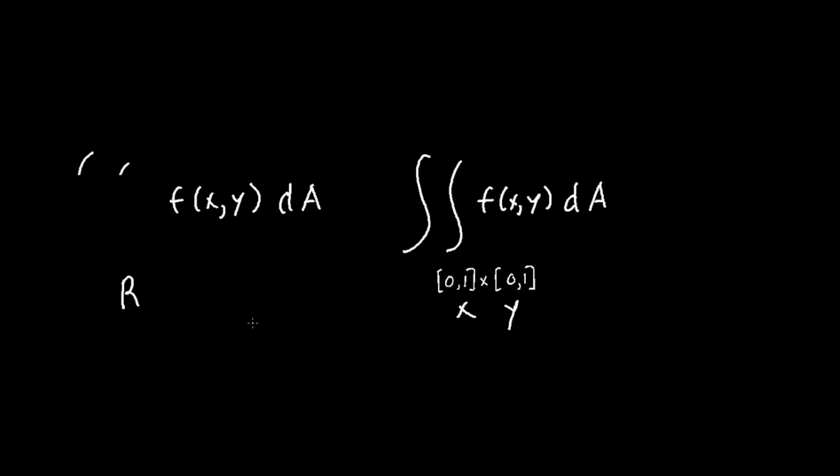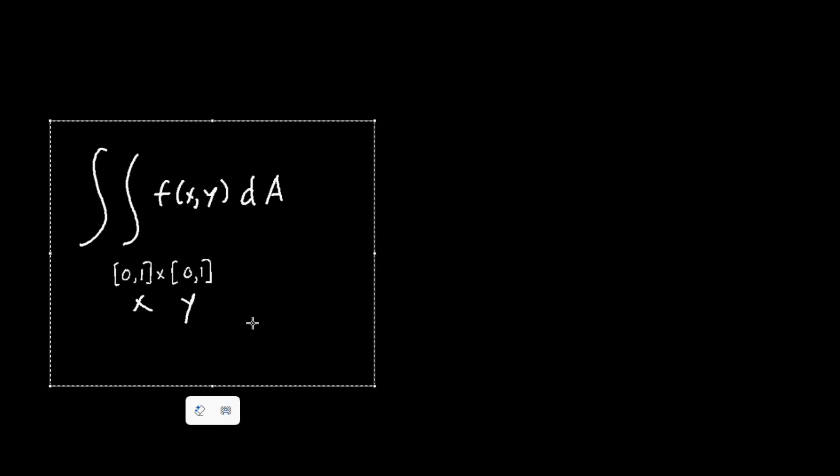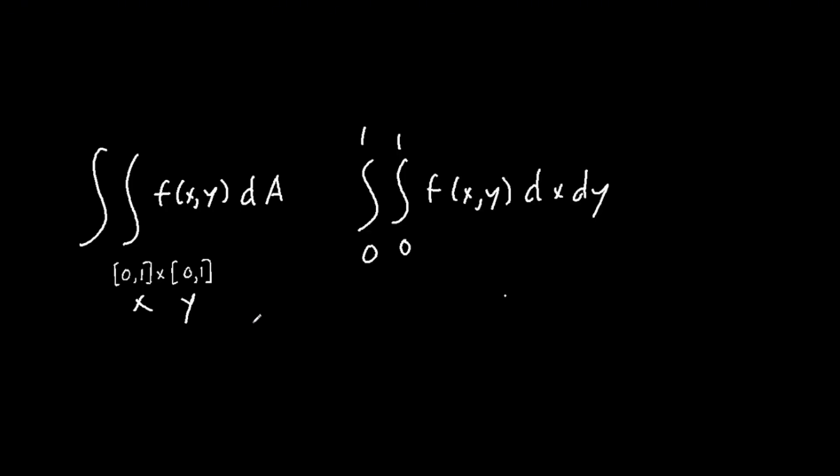When you're setting up this integral, it looks like this: 0 to 1 and 0 to 1 for your function f(x,y) dx dy. The order in which you put dx and dy matters because your bounds must correspond with the order.